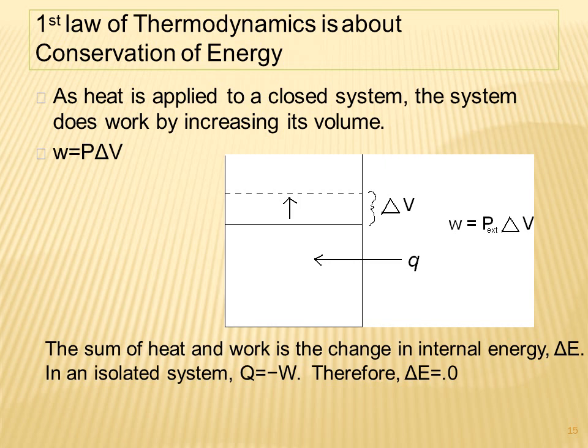The first law of thermodynamics is about conversion of energy. As heat is applied to a closed system, the system does work by increasing its volume: W = P × ΔV. The sum of heat and work equals the change in internal energy. In an isolated system, Q equals negative W, therefore ΔE = 0.